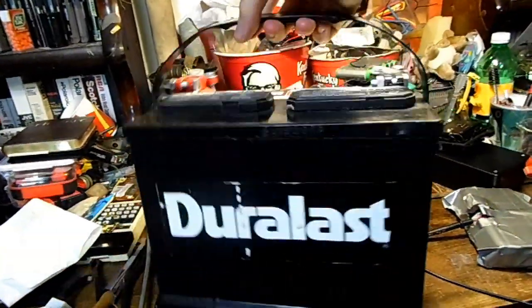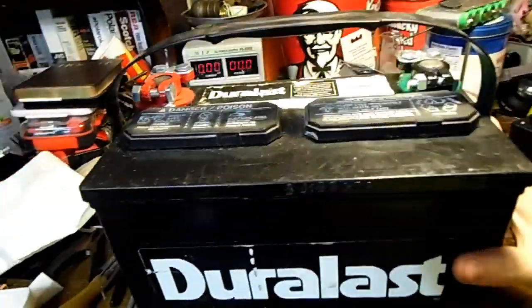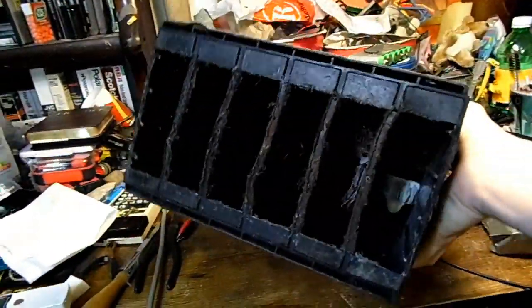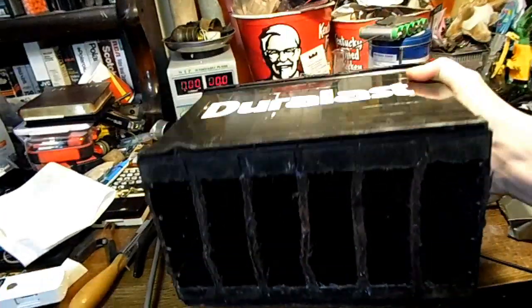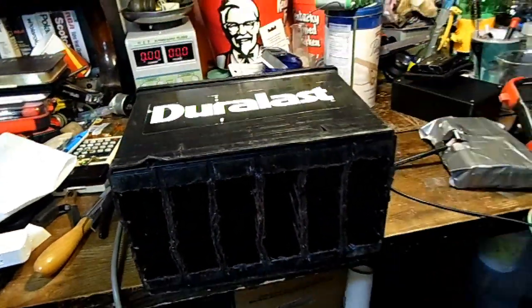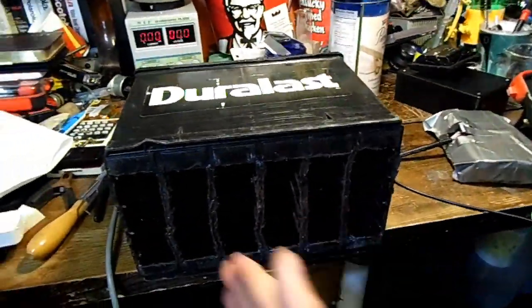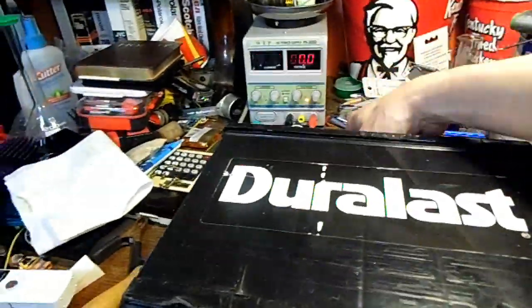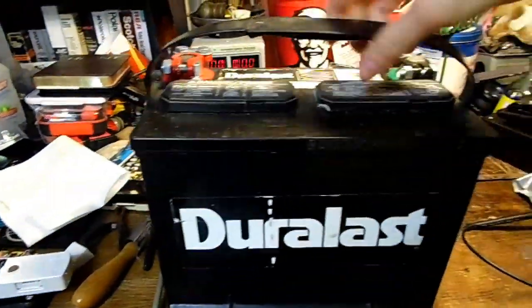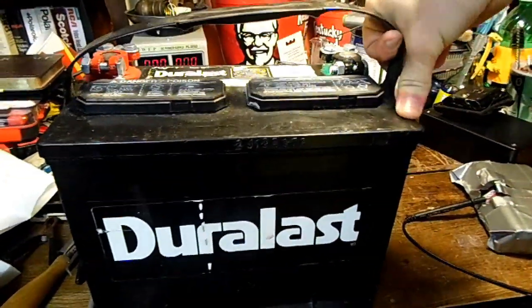So you guys probably remember last year when one of my favorite car batteries shorted out. I cut all the plates out of it and made it really light so I could use it as a prop battery. But the main intention was to put lithium-ion cells in there so I could use it for camping and whatnot, and it would actually hold more power than it did originally.